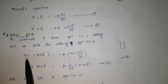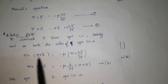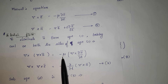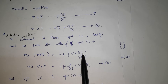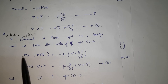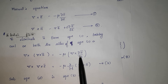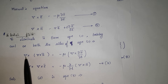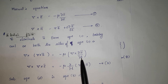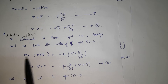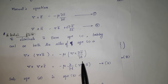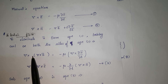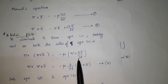Curl function means del cross. So del cross, del cross E is equal to minus mu del cross partial H vector divided by partial T. Here there are two operators: del, which is differentiation with respect to space, and partial by partial T, which is differentiation with respect to time. These two operators are independent of each other.